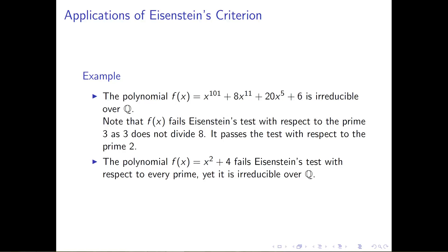However, it definitely is irreducible — it is an irreducible polynomial over the rational numbers. So I have examples of irreducible polynomials that aren't going to be detectable by Eisenstein's criterion. The story with irreducibility does not end with Eisenstein, although Eisenstein does help us pick out some good examples of irreducible polynomials.